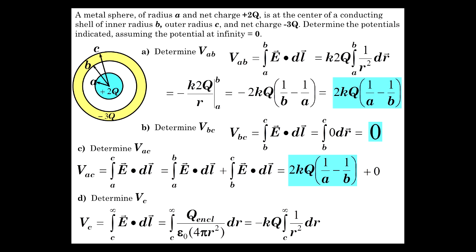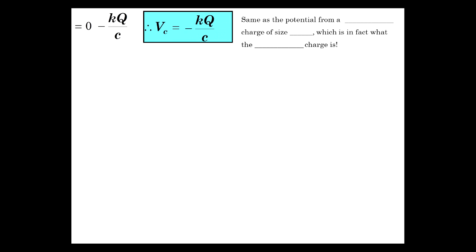Minus kQ from c to infinity of 1 over r squared equals kQ over r from c to infinity, which is equal to zero minus kQ over c. So V_c is minus kQ over c, which is the same as the potential from a point charge of the same size as the overall charge, which is minus Q. So minus Q is the system charge.